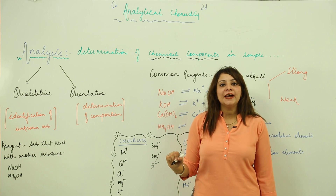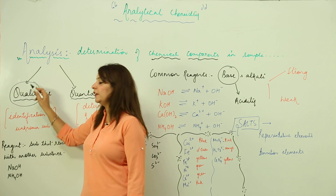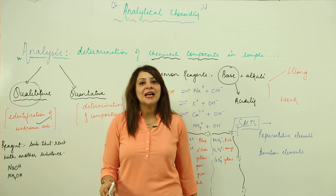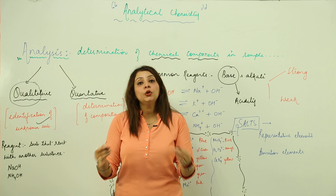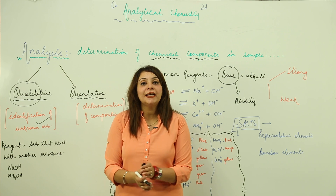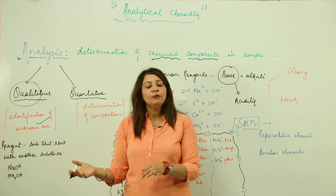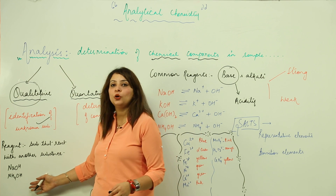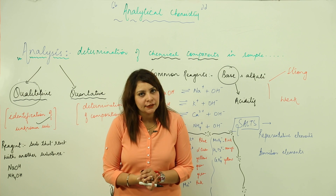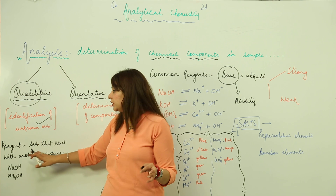Analysis is basically divided into two categories: qualitative and quantitative. Qualitative means we want to know what a substance is actually composed of — identification of an unknown substance refers to qualitative analysis. We do that by performing certain tests using some reagents. A reagent is a substance which has the ability to react with another substance. Common lab reagents include NaOH, NH4OH, and KOH, which are used to determine unknown substances in qualitative analysis.